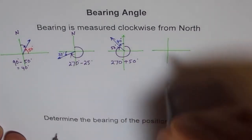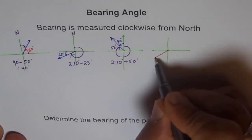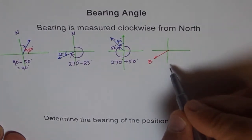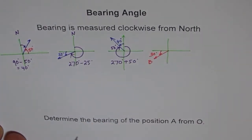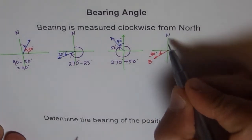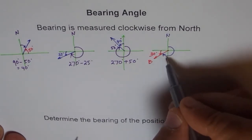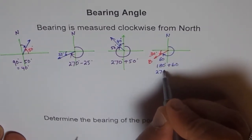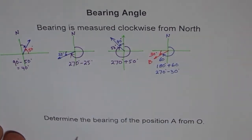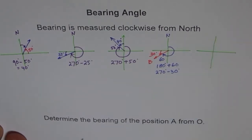Let's say we have a boat at this position, and we have to find the bearing of this boat. The location is given that from here the angle of depression is 30 degrees. The bearing angle is measured always from north, and from north it will be this much. If it is 30 from here, we have 90 minus 30 as 60, and this is 180 plus 60. We could have written 270 minus 30 also — both give the same answer.